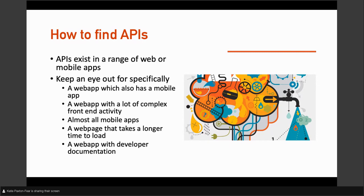If you're looking for things to keep an eye out for — especially if you're new to API testing and not sure if what you've got is an API — the kinds of things I look for: if something has a mobile app or different applications, they're useful because they often write the code once. Any web app with a lot of complex front-end activity — like Gmail has tons of buttons; how is it queuing those actions? Almost all mobile apps and IoT devices use APIs, including pacemakers. Any web page with a longer load time can signify an API. Sometimes you even see developer documentation — if you want to make a Twitter bot, Twitter tells you about their API.